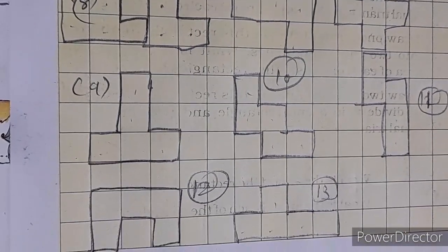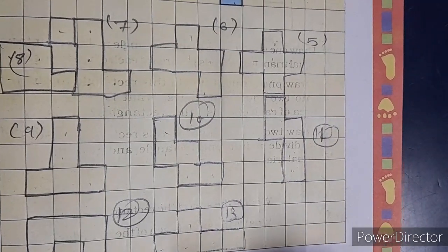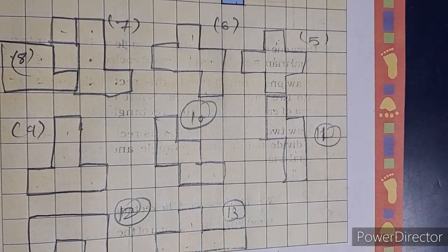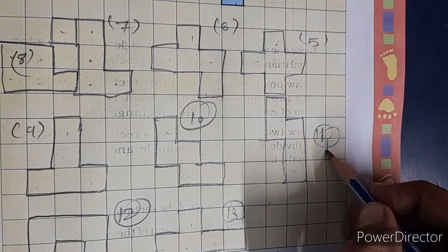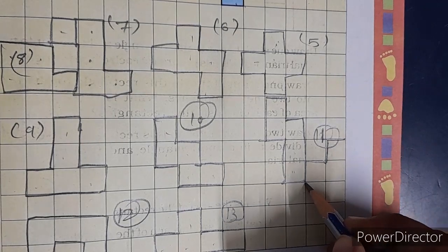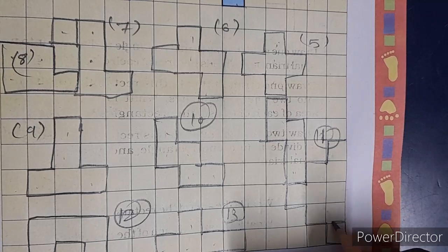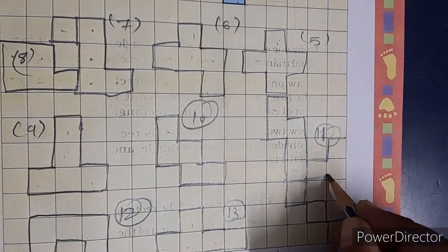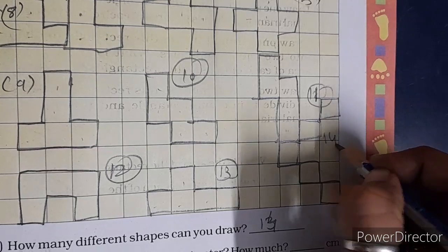You can draw it. We draw it. Which way? Here we start. 1, 2, 3, 4, 5. So this way. So this is our 14.